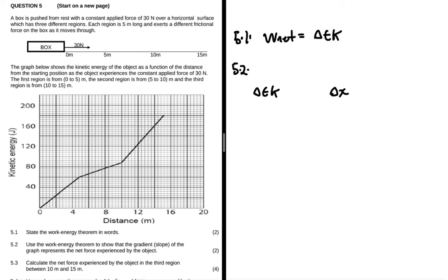From the work-energy theorem, 5.1 is hinting us on what we need to use. From the work-energy theorem we know that work net equals EK, but we also know that work net equals F net multiplied by delta x multiplied by cos theta. So EK equals F net multiplied by delta x multiplied by cos theta.